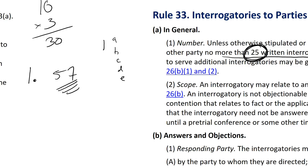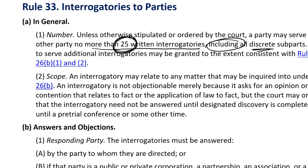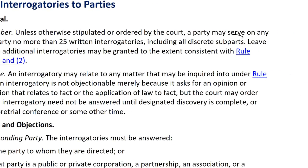Students always ask: what counts as a subpart? There's no clear answer to that. It depends on how similar or different the questions are from each other — how distinct they are. The rule says 25 interrogatories counting the subparts. If somebody objects to one of them, let them object.